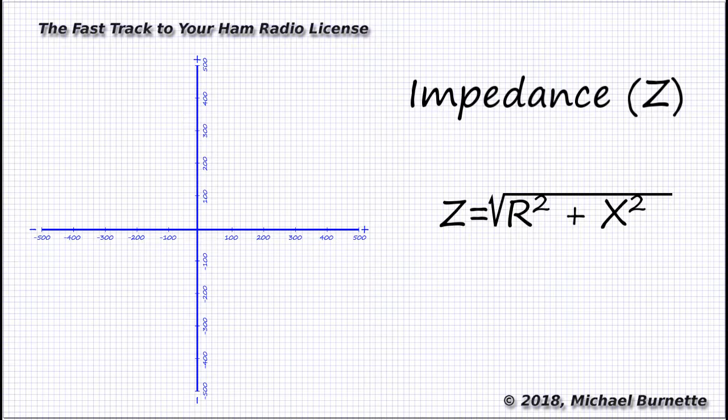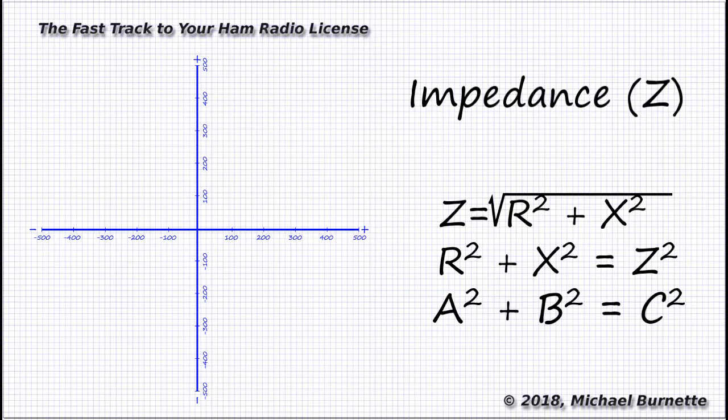With a little basic algebra, we can rewrite that formula as R squared plus X squared equals Z squared. Or, since there's no rule that says we can't change the letters, we could say A squared plus B squared equals C squared. It's the good old Pythagorean theorem. Eighth grade math. For all the mystery and mathematics that surround the topic, every single impedance calculation, at least for our purposes, comes down to nothing but a what is the length of hypotenuse C problem.